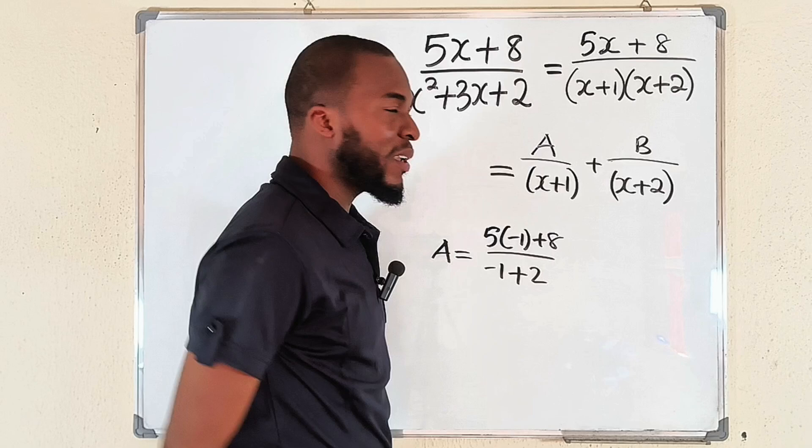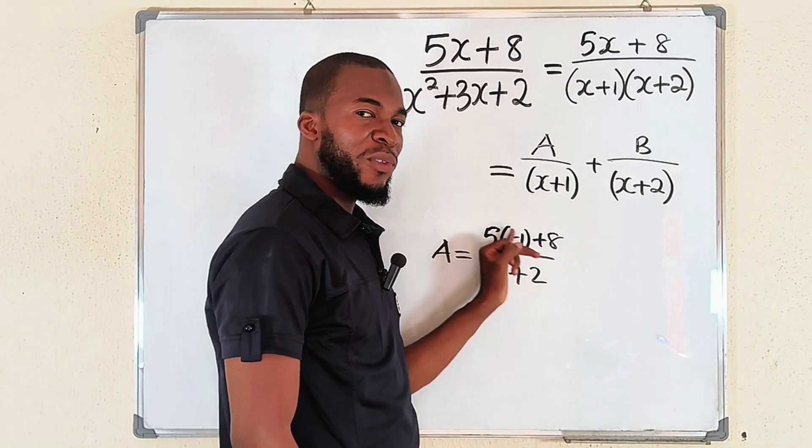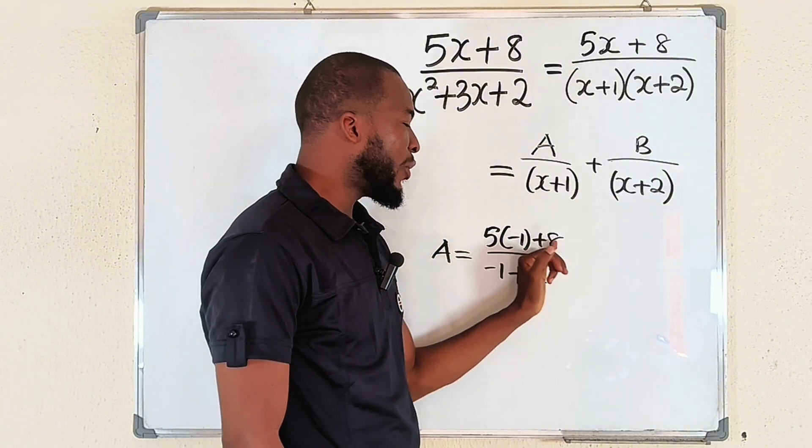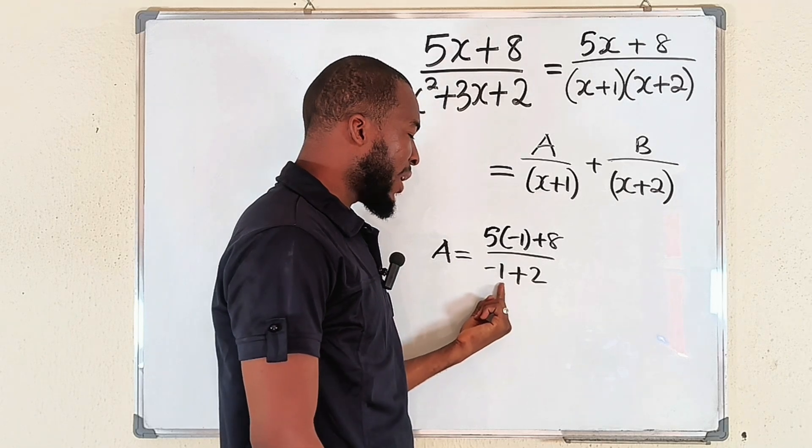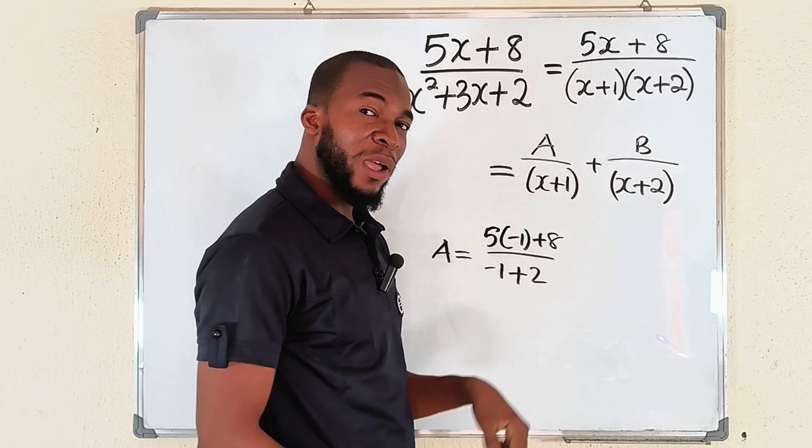Simplify this and get the value of A. Let me do that directly here. 5 times minus 1 will give us minus 5. Minus 5 plus 8 will give us 3. Take note of that 3 at the top. And this is minus 1 plus 2 which is 1. 3 divided by 1 will give us 3.